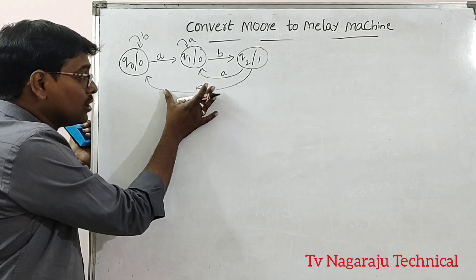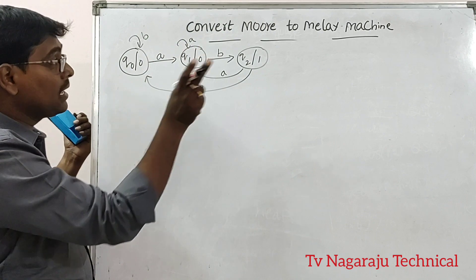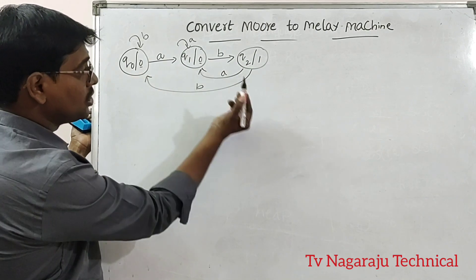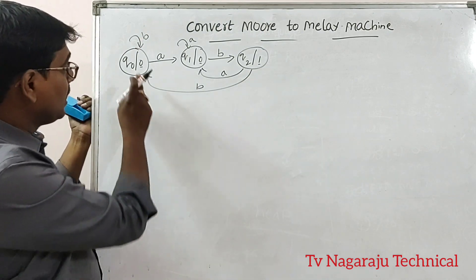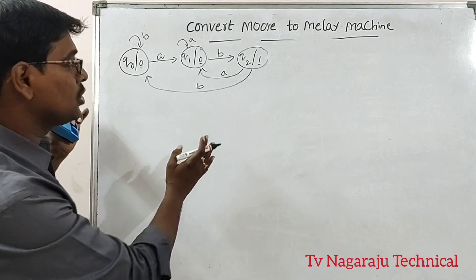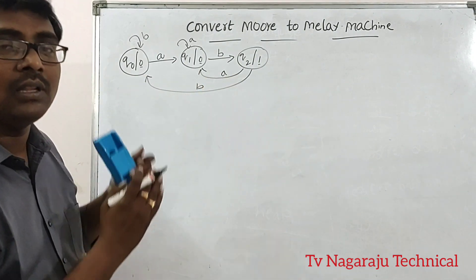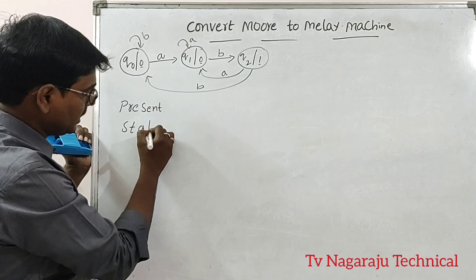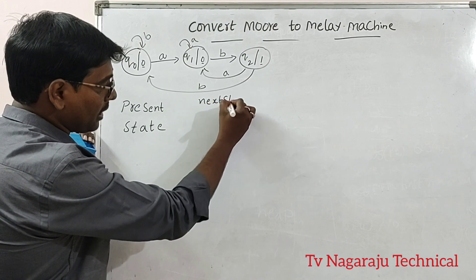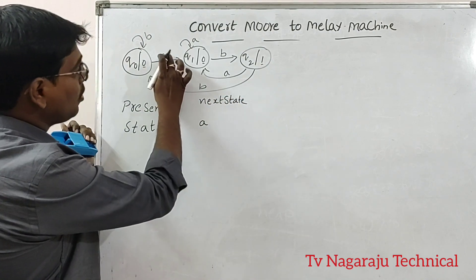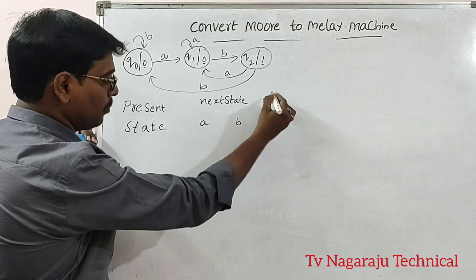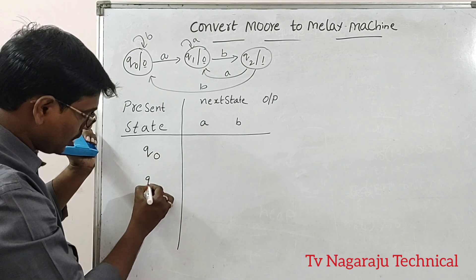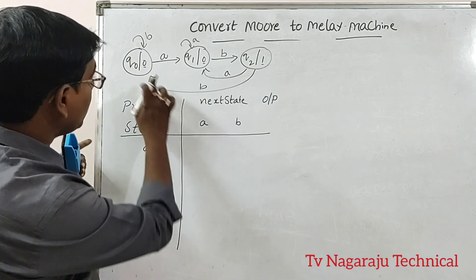First, assume this is a given Moore machine. In the Moore machine, the output depends on the present state, so the output zero or one depends on the state only. The first step is to write down the transition table. For the transition table, we need to write the present state, next state with inputs — I have two inputs A and B — and the output.